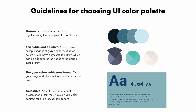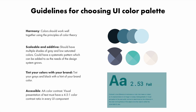WCAG 2.0 refers to the standard set for accessibility. Each guideline has three conformance levels: A, AA, and AAA. Double-A is widely considered the industry standard. Colorable is a great tool for testing your text color contrast — you can mess around with various colors and get a pass or fail based on contrast standards.